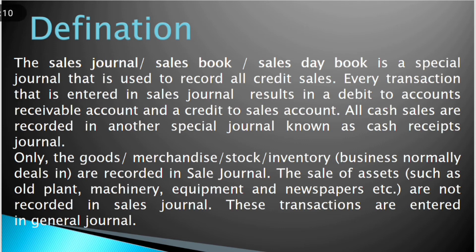Only the goods, merchandise, stock, or inventory that a business normally deals in are recorded in the sales journal. The sales of assets such as old plant, machinery, equipment, and newspaper etc. are not recorded in the sales journal. These transactions are entered in the general journal.